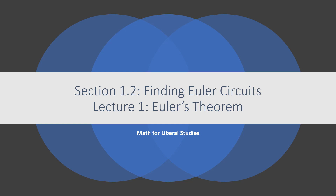This is the first lecture on section 1.2, finding Euler circuits. In the previous section we learned about what Euler circuits are, why we want to find them for certain real world problems, and we did some examples where sometimes we were able to find an Euler circuit and sometimes we weren't. So in this lecture we're going to learn how to tell from the graph whether that graph has an Euler circuit or not.